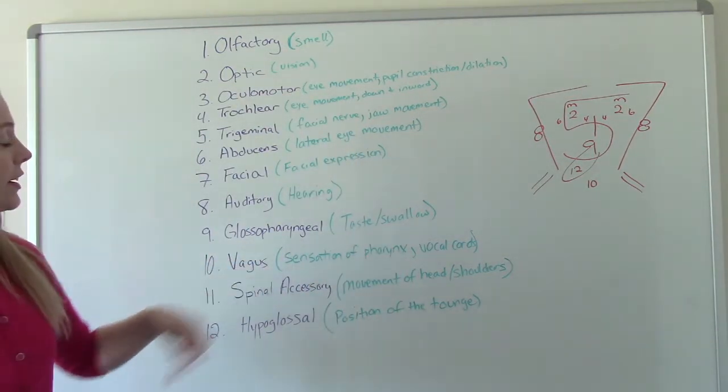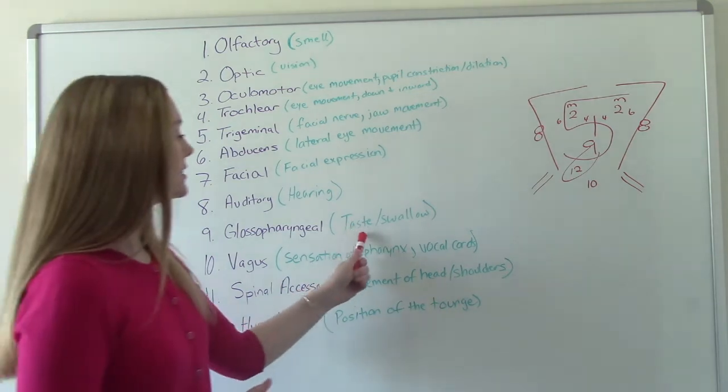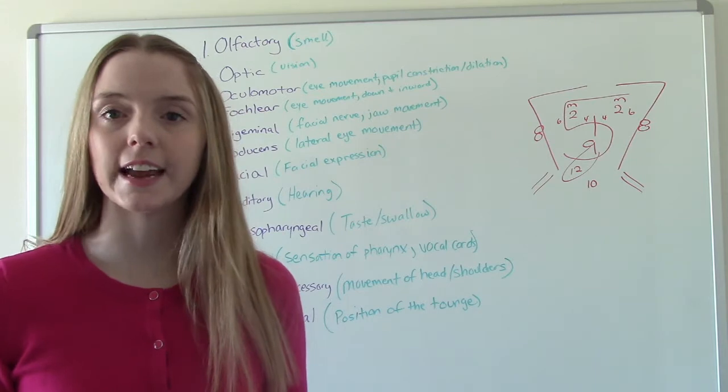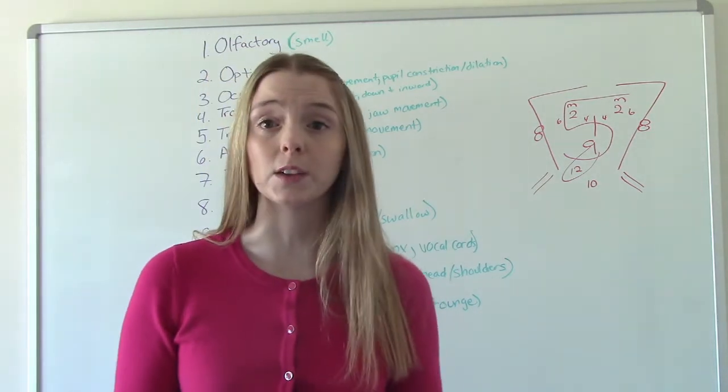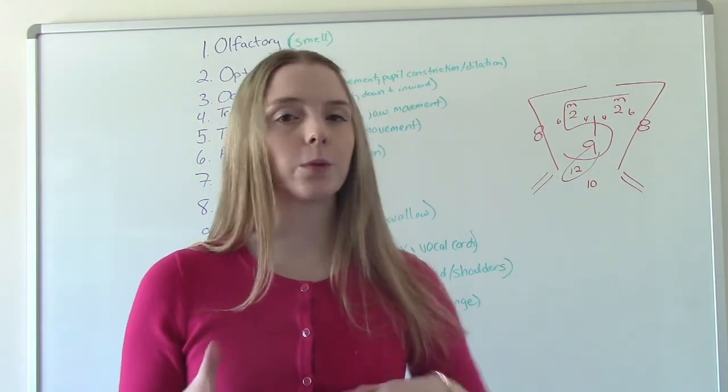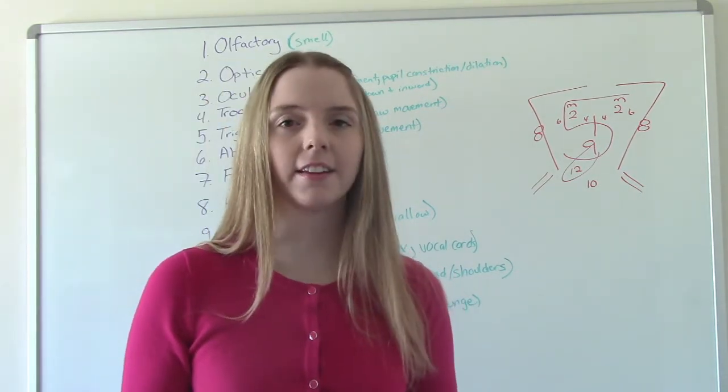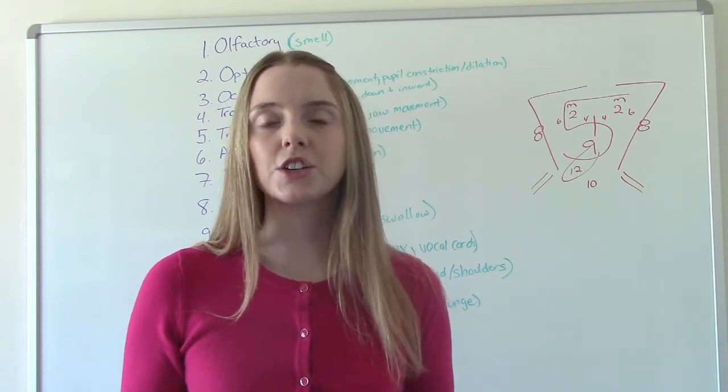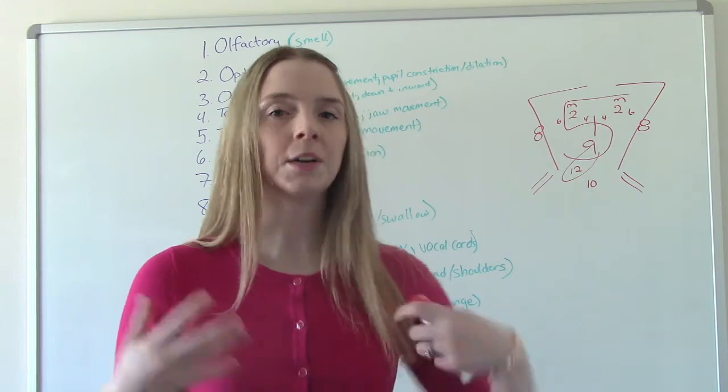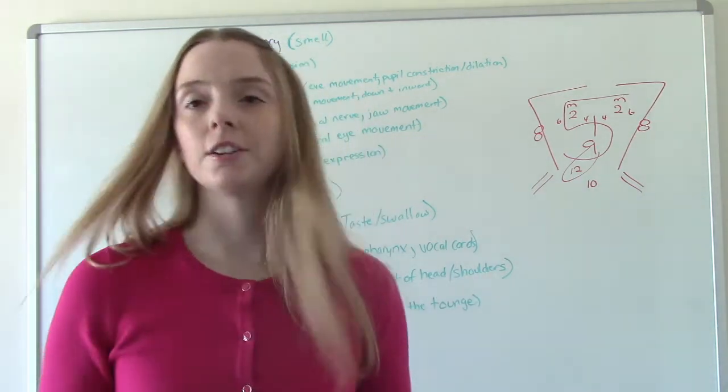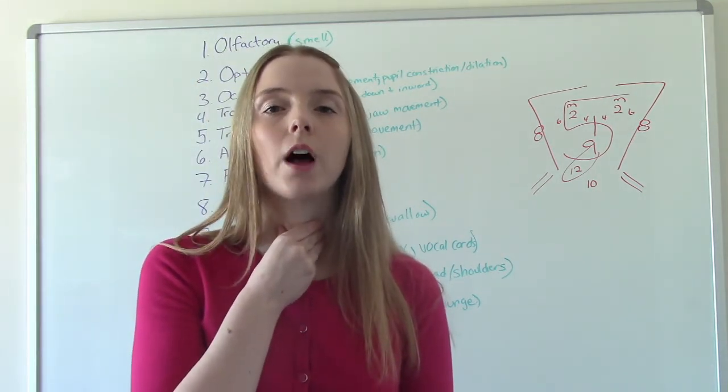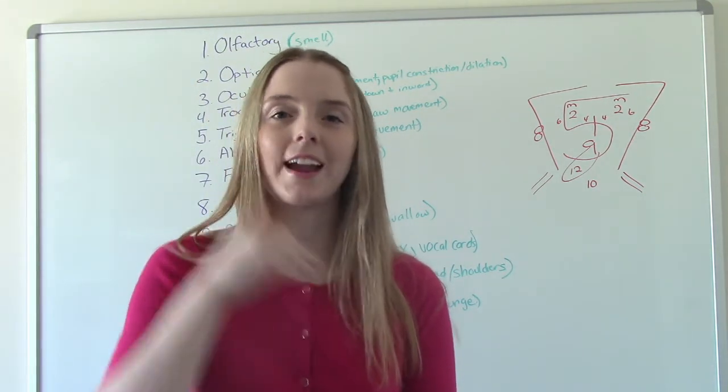Number nine is our glossopharyngeal. So this is the ability to taste and swallow. So when appropriate, we can give them things to taste like something salty, something sweet, something sour, asking, can they tell the difference? If they're on some sort of restriction where they're not able to have anything, you can just ask them to swallow. You're going to be checking their trachea to make sure it's midline anyway as part of your other assessment. So kind of just group it together and say that this is our number nine, our cranial nerve number nine. So just check their throat and say, can you please swallow? Yes? Okay. We're good.